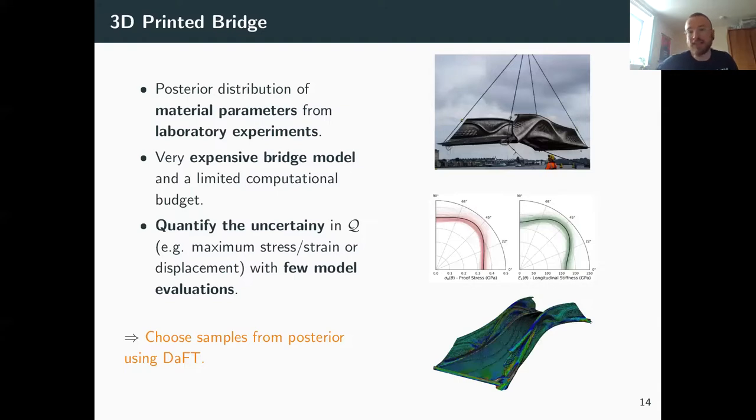All right, so the reason we've started to look into this is because we want to use it on a real problem. And this links back to what I showed earlier with this multi-fidelity model, where we have a way to estimate these material parameters from some laboratory experiments. But we actually want those material parameters to estimate some quantity of interest on this bridge, for example maximum stress or displacement. But it's a very expensive model. This is the mesh, and we don't have the budget to run that many samples through it. So that is really the objective or that was one of the motivations of developing this thinning method in the first place.